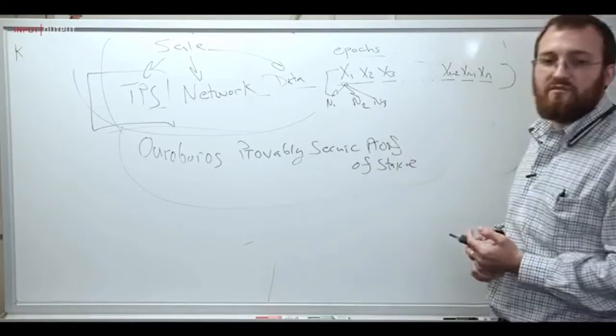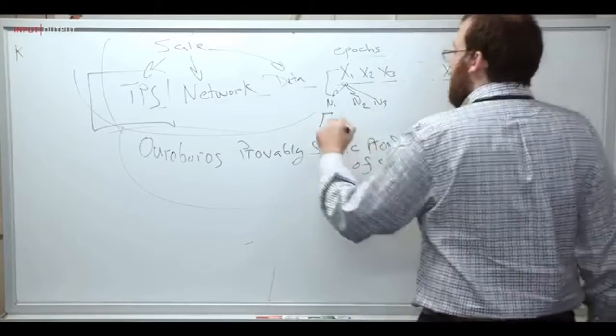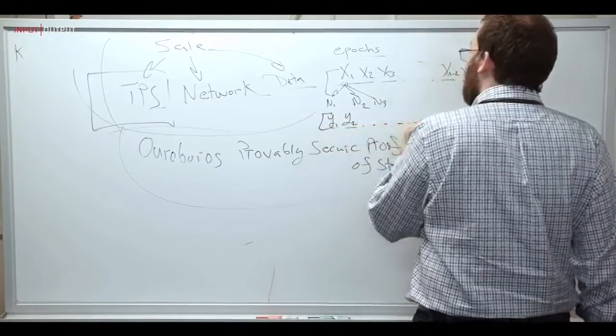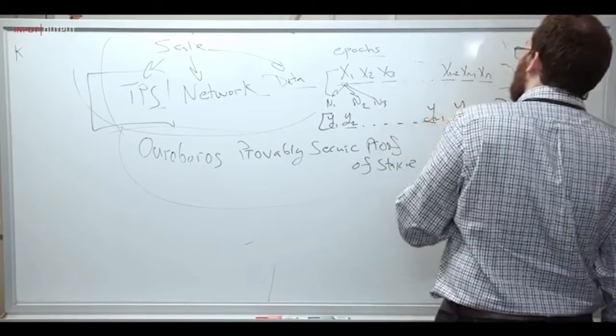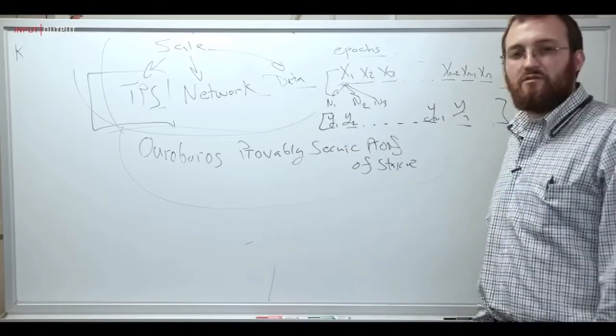Furthermore, epics perhaps could even be run in parallel. So instead of having one epic run and then another epic run, one could develop a system using Ouroboros where epics run in parallel and transactions are partitioned accordingly.